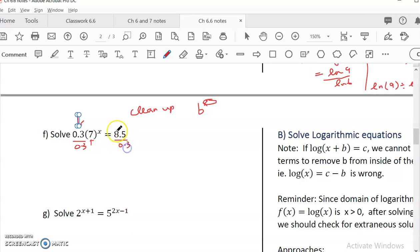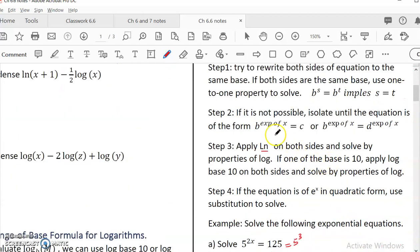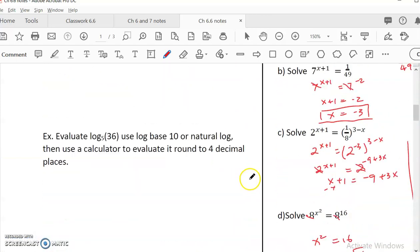Divide by 0.3. If it is easily cancelled, you can cancel it. But if not, just keep it, keep the exact value. Now you have 7 to the x, so clean. One base, one exponent, equal to 8.5 over 0.3. Now you can do ln. So look at the approach that we said earlier. They say isolate until the equation is of the form b to the exponent of x equal to c. So that's what we did. Isolate until you clean up everything. Now you add ln.